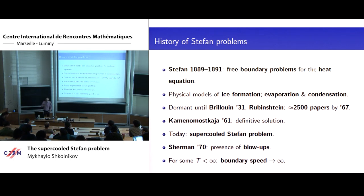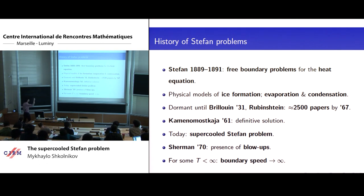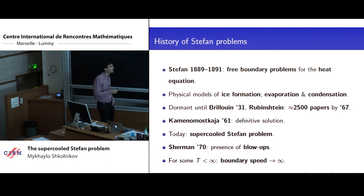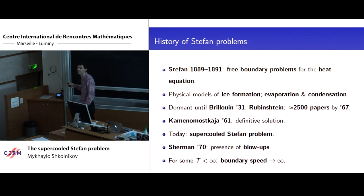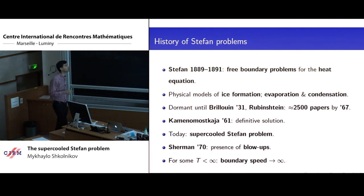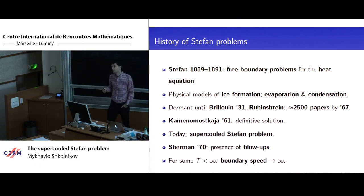He wrote down a free boundary problem which describes this behavior. Then he realized that there is nothing special about the phase transition from water to ice. In subsequent papers, he looked at other phase transitions — evaporation and condensation, and so on. In the style of 19th century, he wrote down various explicit solutions for the Stefan problems — for the free boundary problems he had formulated.